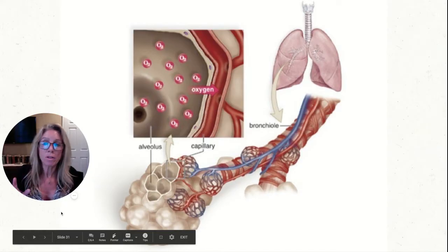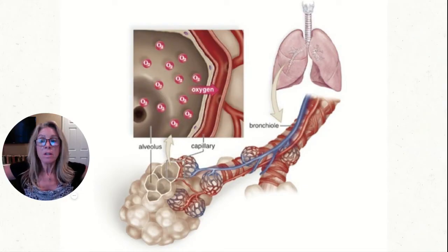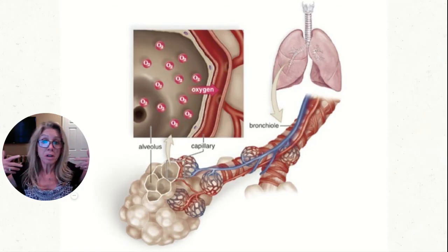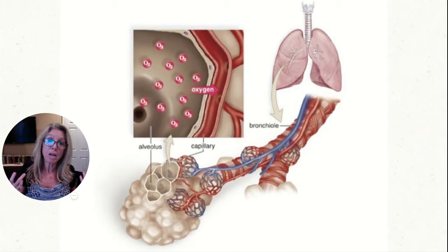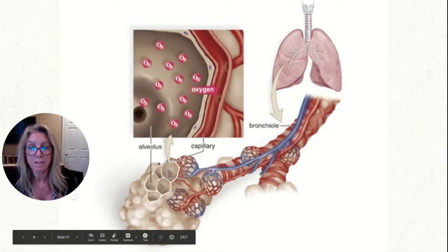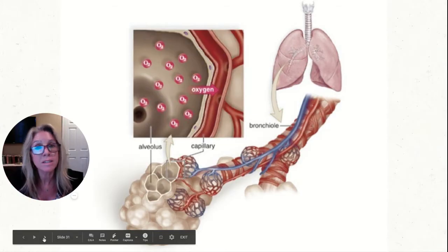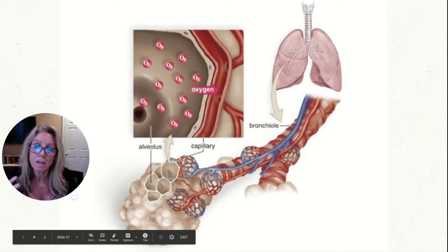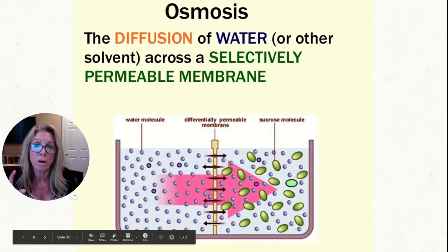Diffusion happens all the time. You take a big breath in — oxygen is diffusing across your alveoli into your capillaries to hook up with hemoglobin in your red blood cells. CO2 becomes carbonic acid, converts back to CO2, and diffuses back across as you exhale. Across your intestines right now, if you've got food in there, it's diffusing across. But what we want to focus on in the next couple of slides is just the movement of water, since we are mostly water.